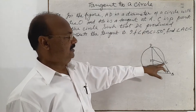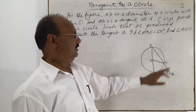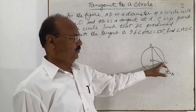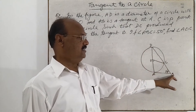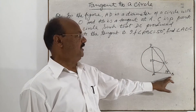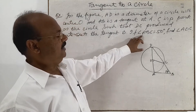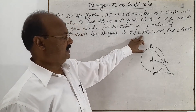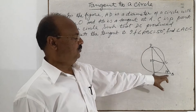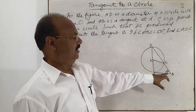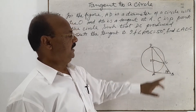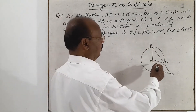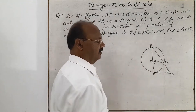C is any point on the circle such that DC produced intersects the tangent at point B. Angle ABC is given as 50 degrees. We have to find angle AOC.